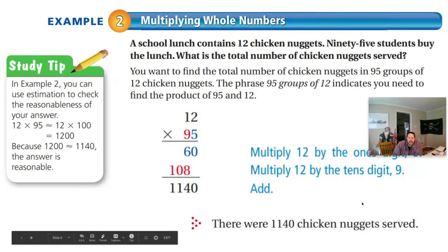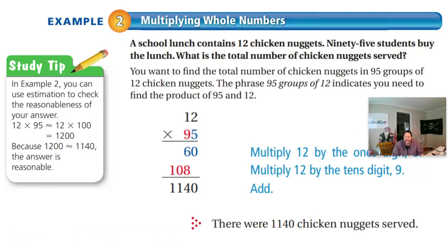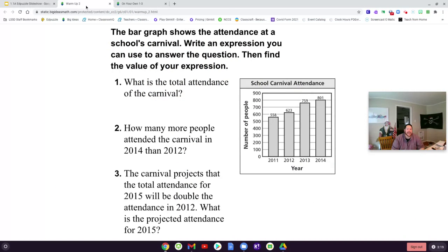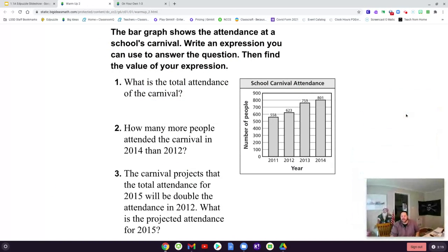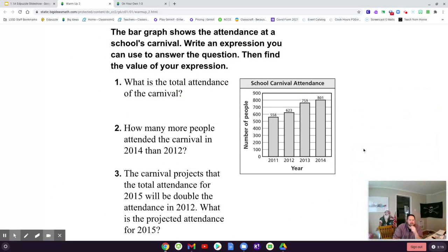That is kind of a brief review of how to add and multiply and subtract. We're moving on to actual, this is a problem right out of the big ideas here. This bar graph shows the attendance at the school carnival. Write an expression you can use to answer the question. Then, we're going to find the actual answer.